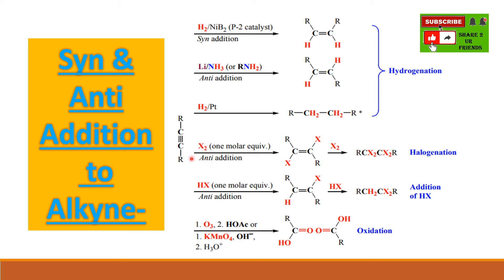If the halogenation reaction takes place, we know that it undergoes anti-addition. But the thing is, if you add one molar equivalent, you will get two halogens added and one double bond will remain as it is. If you add excess, there will be no double bond left. In the same way, even if it is X2 or HX, one molar equivalent means only one will get added; if it is excess, then both the double bonds will not be there.